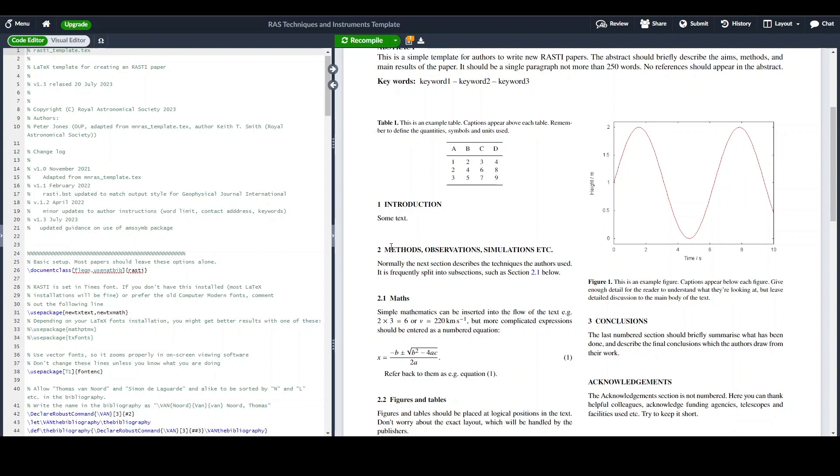Then we have the second heading, which is methods, observations, simulations, followed by a subsection as maths. Now, how do we customize it?